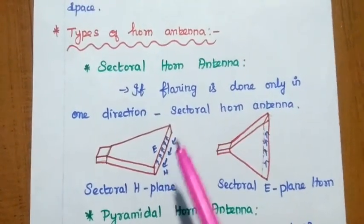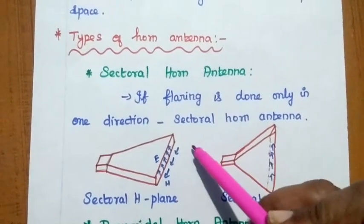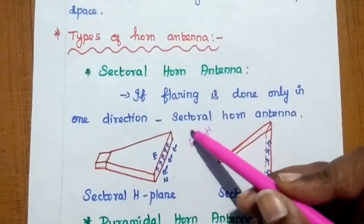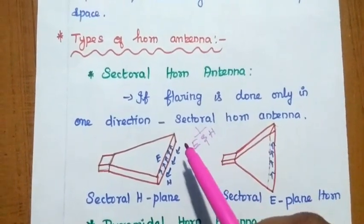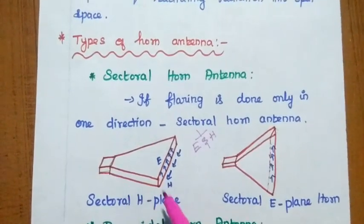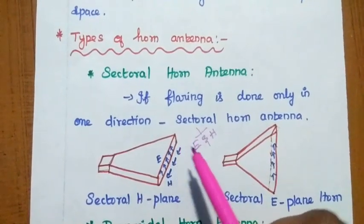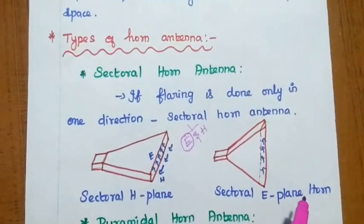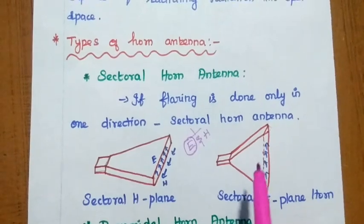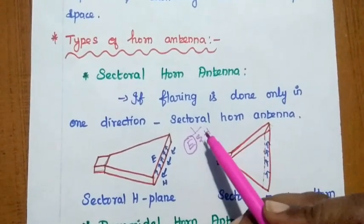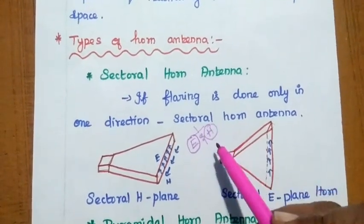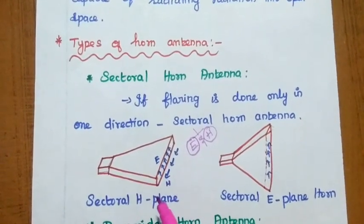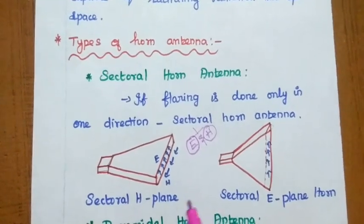Only one direction means: the electromagnetic wave has both electric field and magnetic field, and they are perpendicular to each other. If we flare the horn with respect to the E-plane, that is called the sectoral E-plane horn antenna. If we flare with respect to the magnetic field alone, that is called the sectoral H-plane antenna. This is the difference between H-plane and E-plane horn antennas.